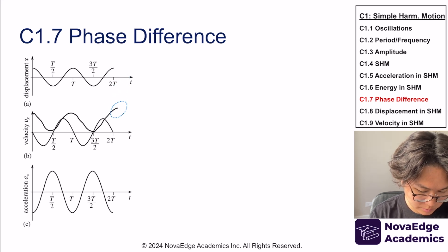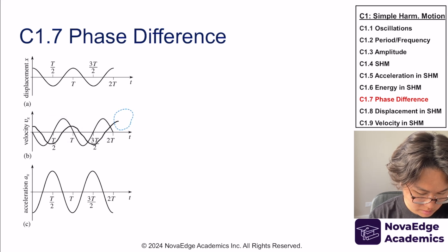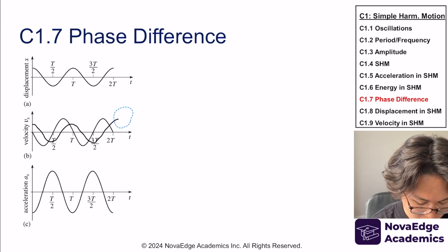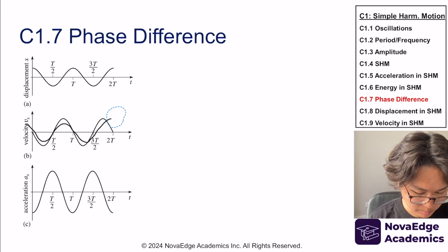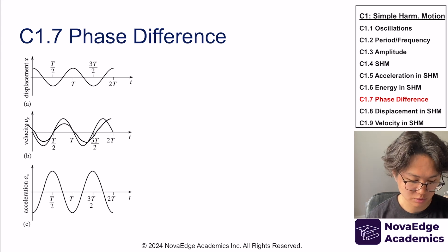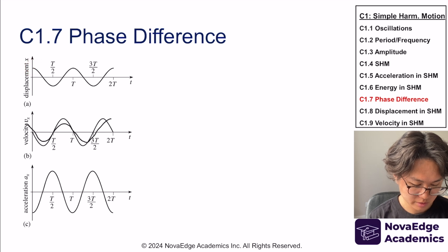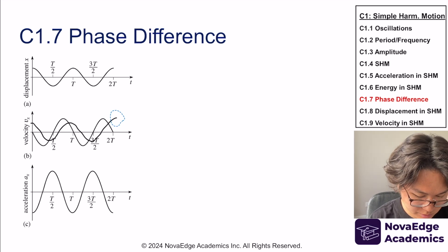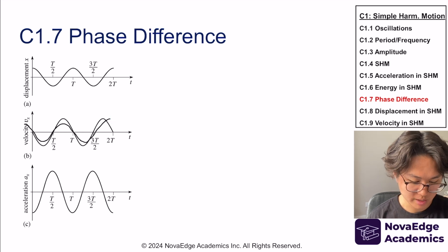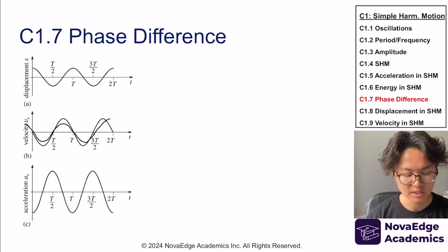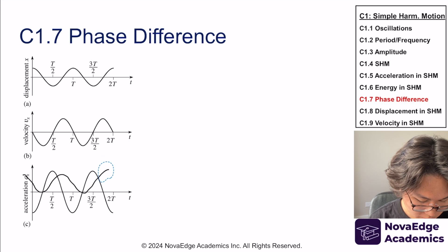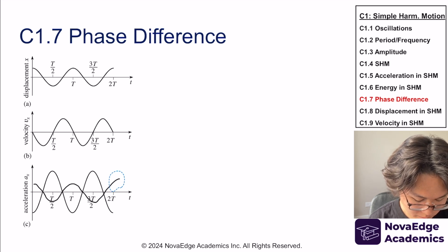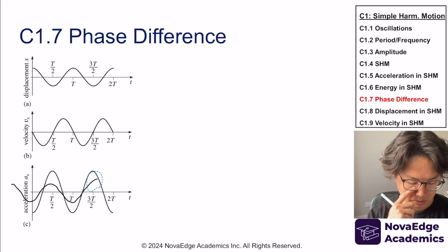If I move the displacement graph and try to overlap it with the velocity part, they don't look similar. But if I shift by a little bit, they overlap. The amplitude of each graph is not the same because displacement could be five meters and velocity could be ten meters per second. To go from displacement to velocity I need to shift by a quarter of a period, and to go from displacement to acceleration I need to shift by T over two. That shift amount is the phase difference.